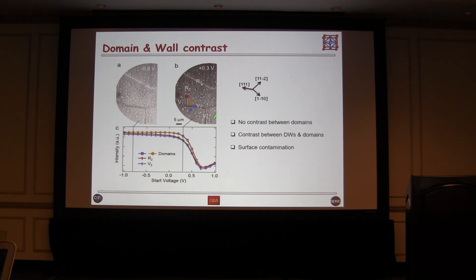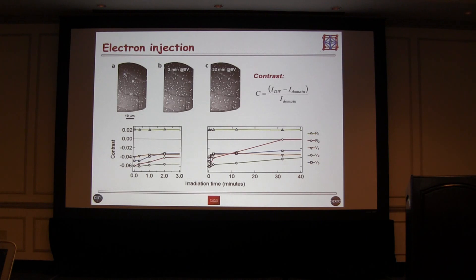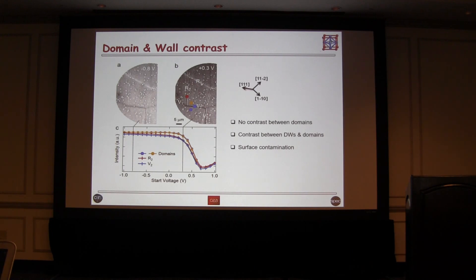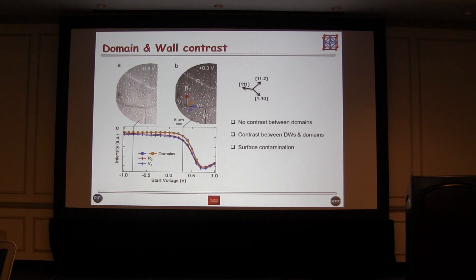We can identify these walls. If we think about the model of the surface potential, this also allows us to identify — without any further analysis — what is the polarity. The darker domain walls are positively-poled domain walls, meaning the polarity is pointing upwards towards the microscope. The brighter intensity means the polarity in the domain walls is pointing down into the bulk of the sample. So we recognize and identify domain walls and identify their polarity.